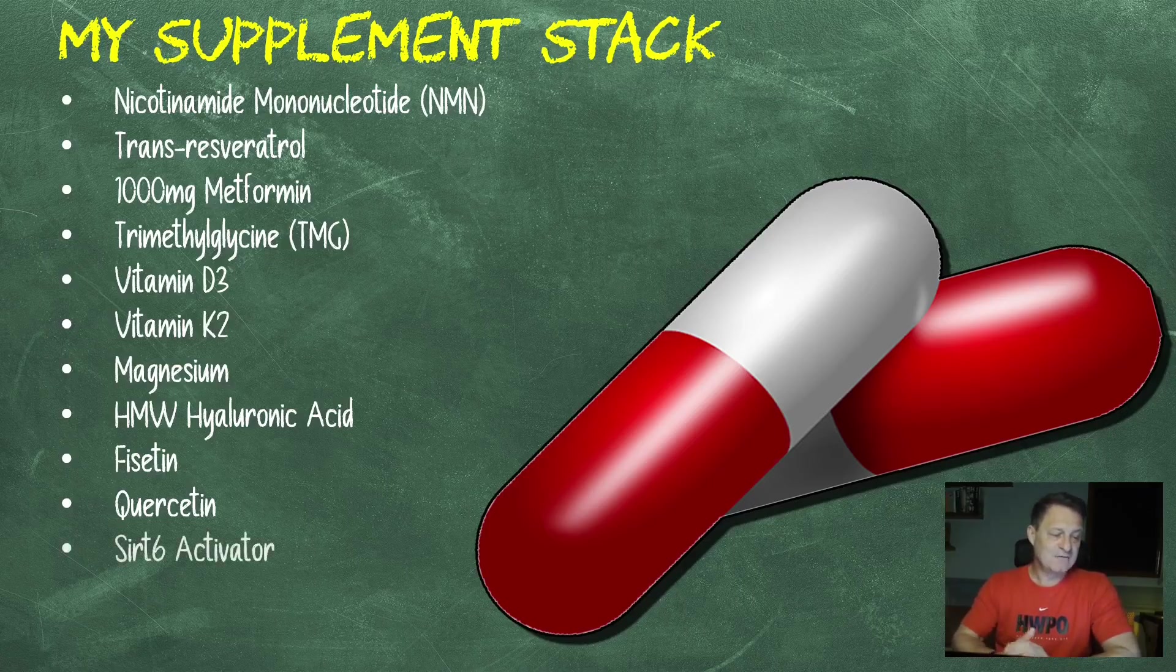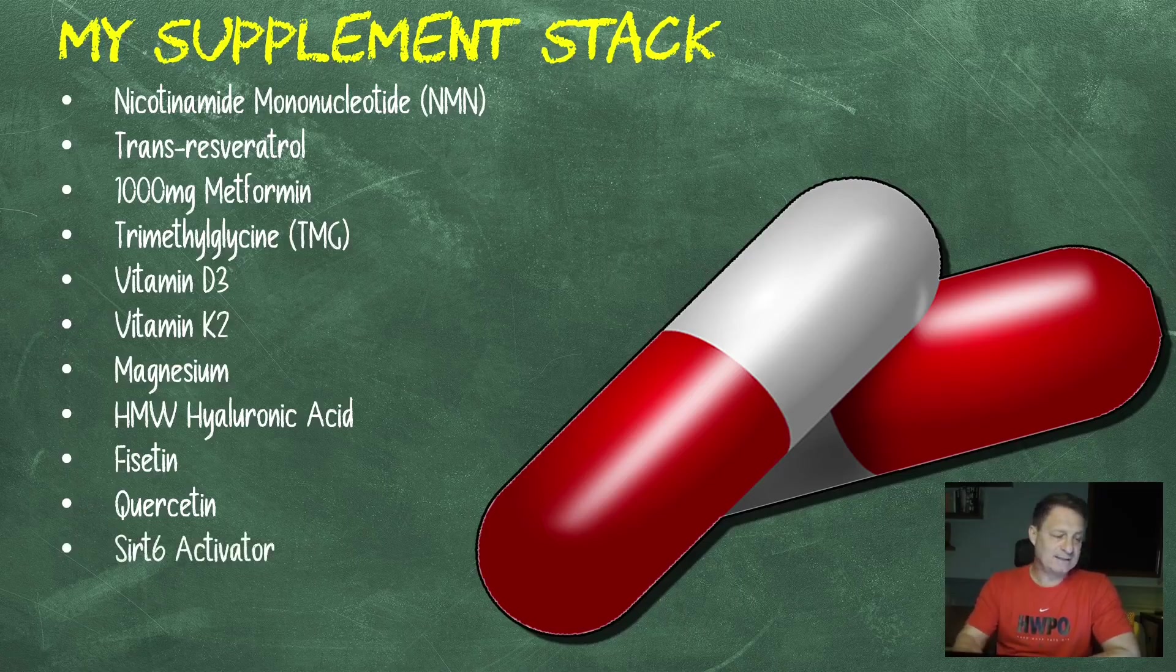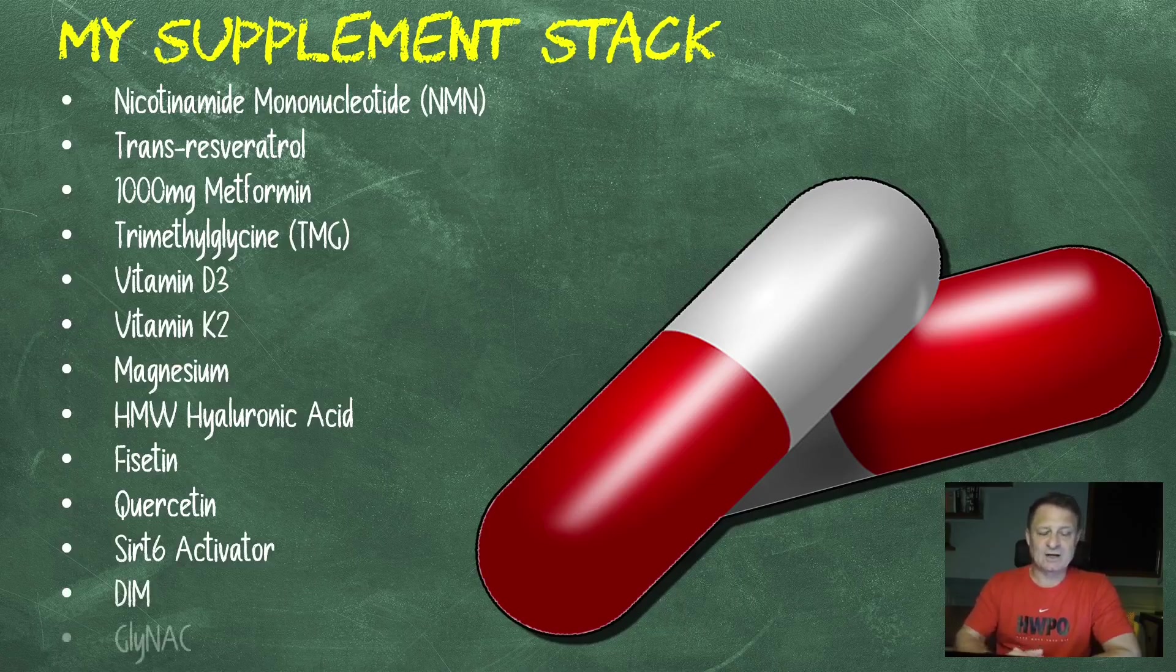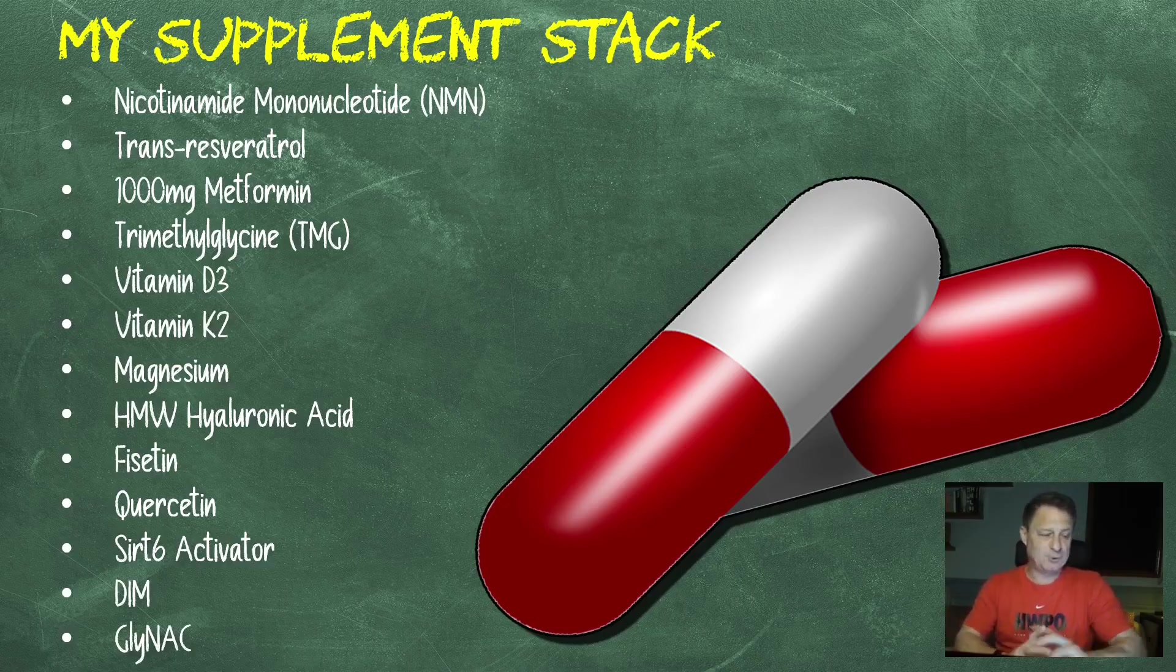Sirt-6 activator, 400 milligrams per day. DIM, 600 milligrams per day. And glycine or Glynac, which is NAC and glycine, 800 milligrams per day.